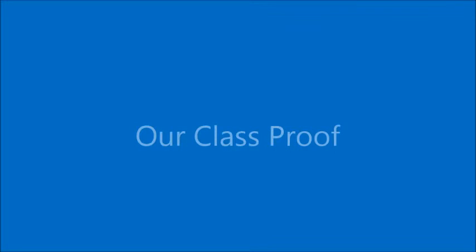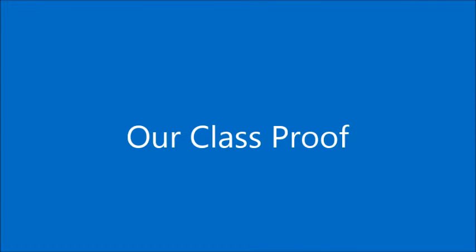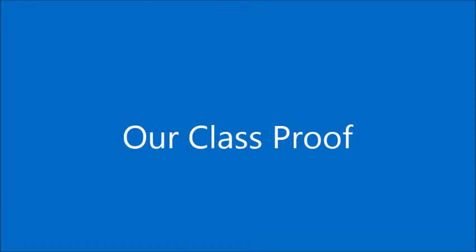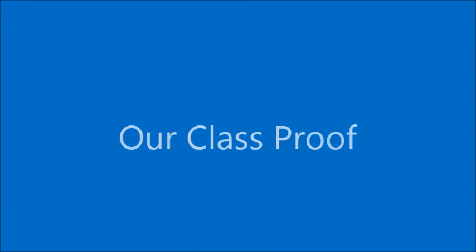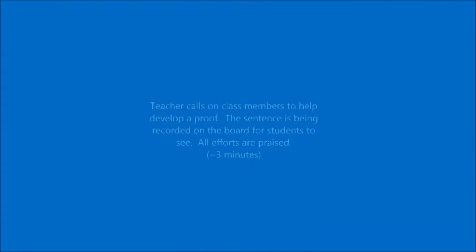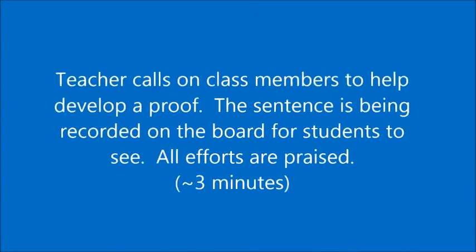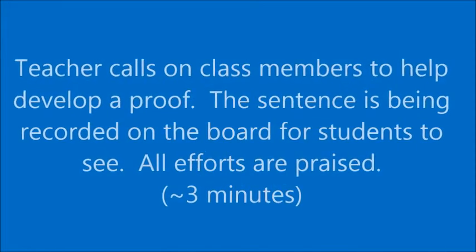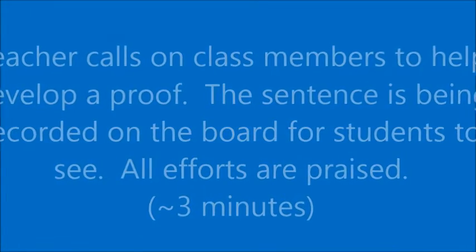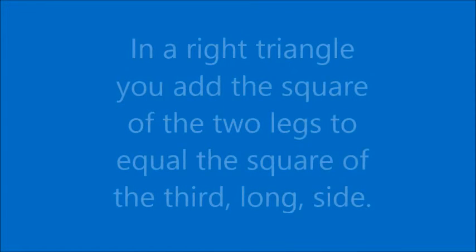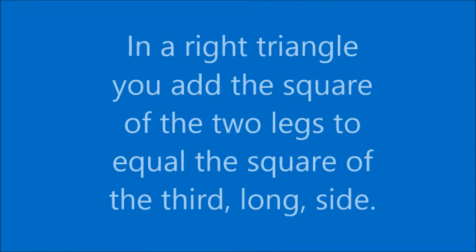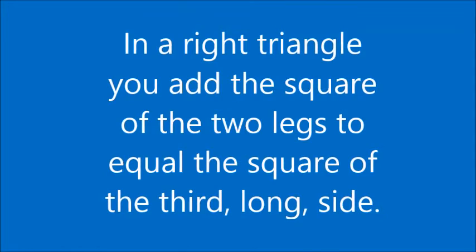I heard some really awesome collaborations happening there. Good job getting down what the definition of a mathematical proof is. So now we're going to come up with one together. We're looking for a sentence in our own words that's going to show us why the Pythagorean theorem works. So let's do some brainstorming together now. Great job! Our class proof now says, in a right triangle, you add the square of the two legs to equal the square of the third, the longer side. Make sure that you record this in your notebook now.